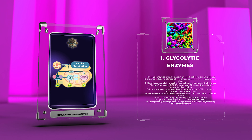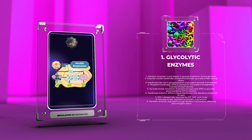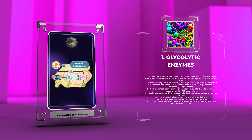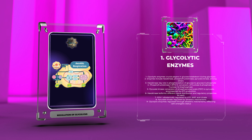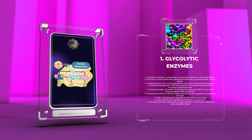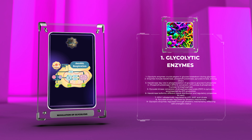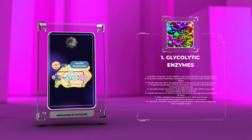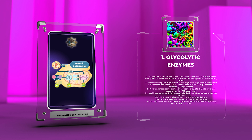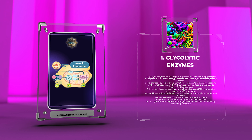Firstly, hexokinase, also known as glucokinase, plays a key role in catalyzing the phosphorylation of glucose to glucose-6-phosphate. This initial step is essential for trapping glucose within cells and committing it to the glycolytic pathway. Hexokinase comes in different isoforms, each with distinct tissue distribution and regulatory properties.